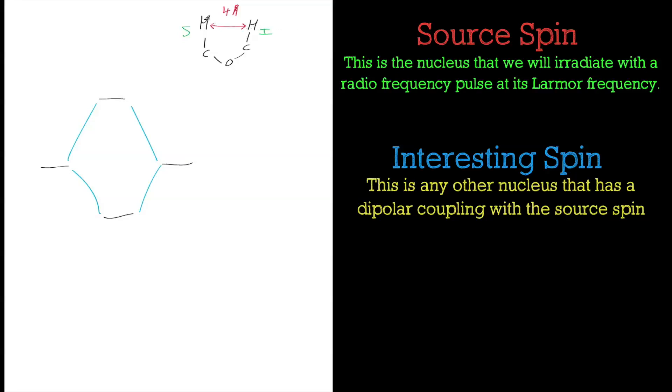If we now irradiate the source spin with an RF pulse at its Larmor frequency, basically at its resonance frequency, what will that do to the source spin and the interesting spins? We're just going to look at the two spin system, the source spin and the interesting spin, these two hydrogen atoms. This is an energy level diagram which you should be familiar with by now.